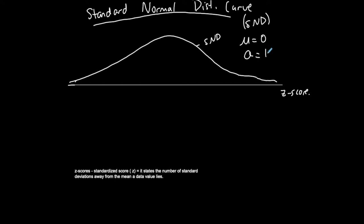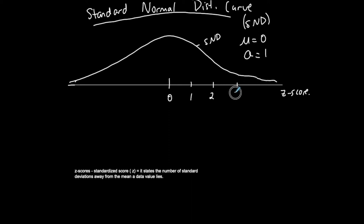If I'm on an SND curve, automatically the mean is zero and the standard deviation is one. If I'm talking about z-scores, automatically I'm on an SND curve with mean zero and standard deviation one. The center of this curve is zero, so one standard deviation above the mean is 0 plus 1, or 1. Two standard deviations above the mean is positive 2, and three standard deviations above the mean is positive 3.